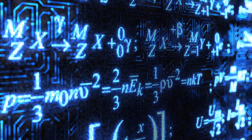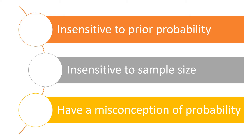The problem with taking this approach to judgment of probability is that the representativeness heuristic can lead to serious errors when people are, first, insensitive to prior probability; second, insensitive to sample size; and third, have a misconception of probability — that is, the stereotype is wrong and the base rate points to another direction.